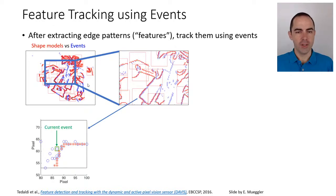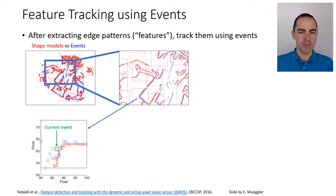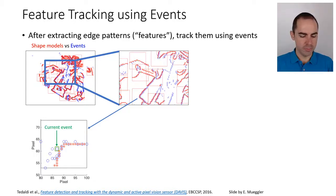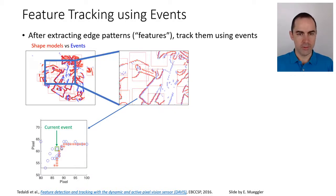Zooming into one of these patch regions, we see how the method works. There is a current incoming event, and the shape model from the previous iteration is shown in red — it could come from the frame or from a prior set of events. The key question is: when a new green event arrives, how does it affect the shape model to determine how the shape is moving? Specifically, to which of the red points in the shape model does this event correspond?